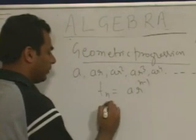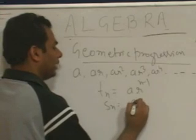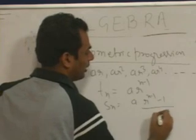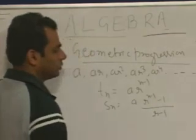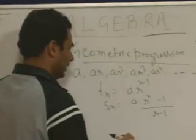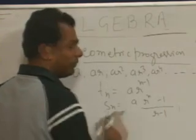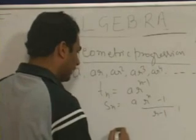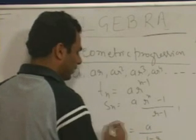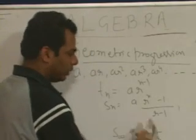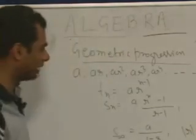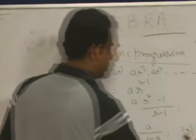The sum of n terms is equal to a into (r to the power n minus 1) divided by (r minus 1). And the sum of infinite terms is equal to a upon (1 minus r), which is only possible if the modulus of r is less than 1, or the value of r lies between minus 1 and plus 1.